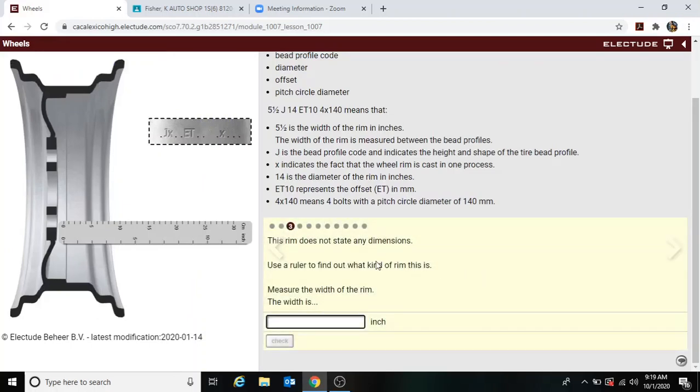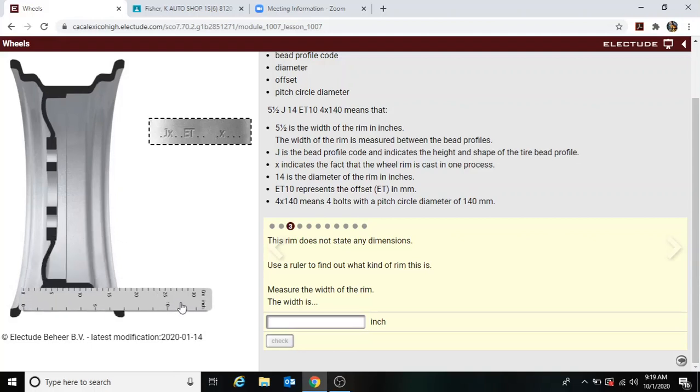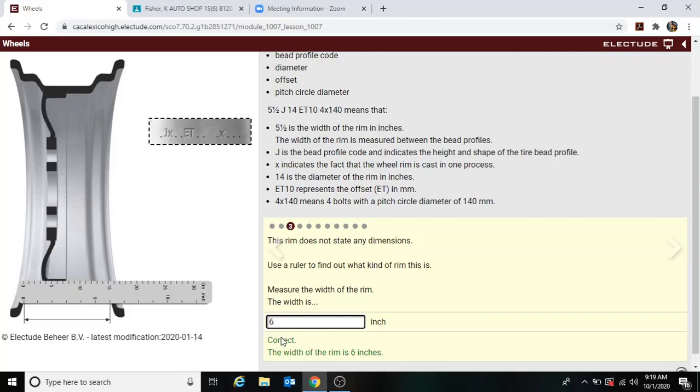Okay, now here it says we got to measure, use a ruler to find out what kind of rim this is. Measure the width of the rim. So we have to use inches, so here is the inch side and centimeter side. Remember it was roughly about right here where we need to measure, so we have zero to six, so we can put in six. Check that and see—oh we were right on target, nice.